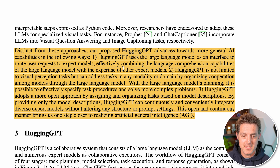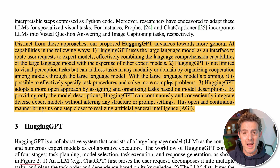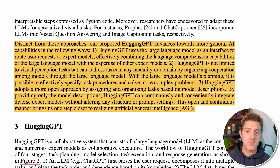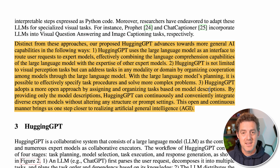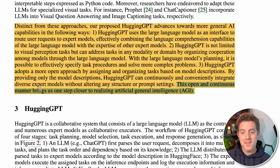This paragraph explains what it's doing in more detail. HuggingGPT uses a large language model as an interface to route user requests to expert models — it's like that orchestration layer or a router. HuggingGPT is not limited to visual perception tasks, but can address tasks in any modality or domain. HuggingGPT adopts a more open approach by assigning and organizing tasks based on model descriptions. Literally the descriptions that people are putting about their models on Hugging Face — that's how ChatGPT, the brain of it, is deciding which model to use for which task. This open and continuous manner brings us one step closer to realizing artificial general intelligence, because this architecture allows models to do what they do best, whether you're a fine-tuned model or a generalized model.